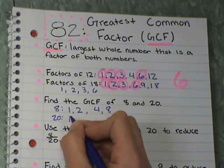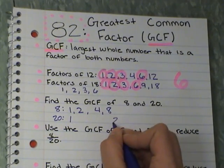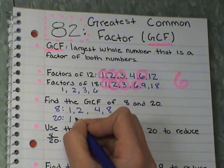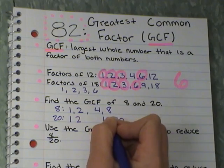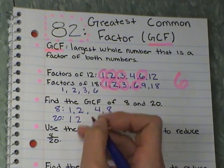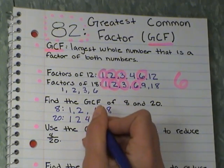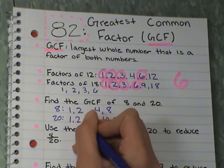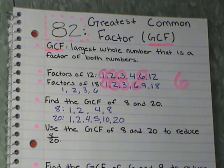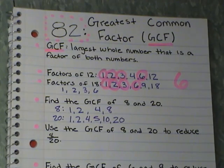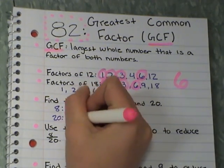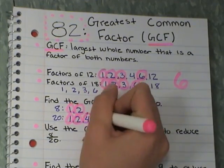For 20, I'd go 1 and 20, 2, 10, does 3 fit in? No. 4 times 5. And then I'm back at 5. So I'm done. And I'm going to go through with a highlighter and highlight my common factors. 1, 1, 2, 2, 4, 4, does 8? Nope.